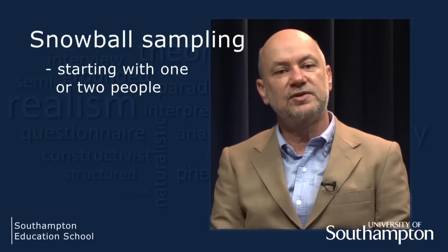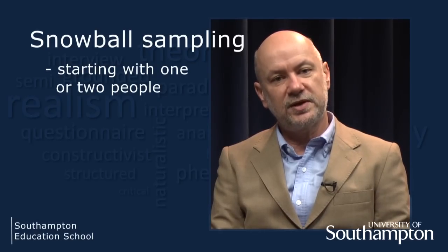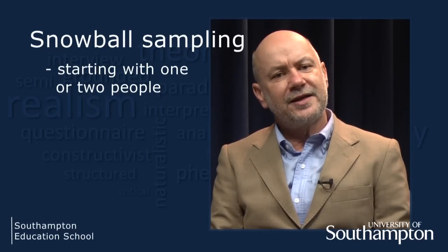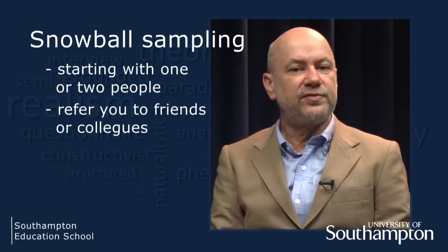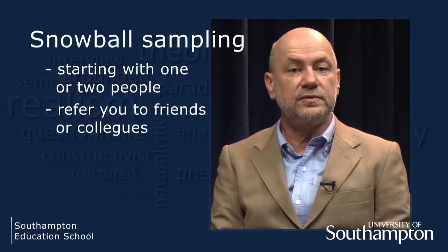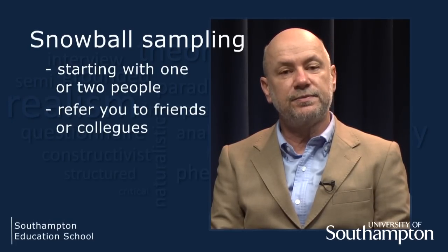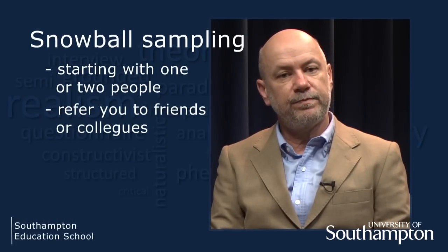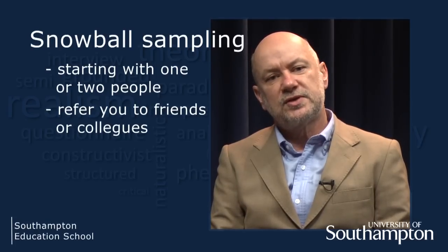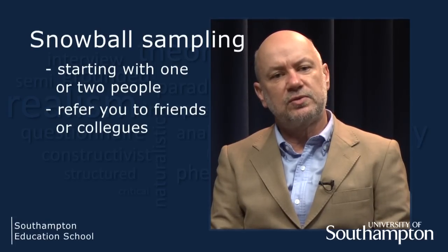Another purposeful sampling method is snowball sampling. This involves starting with one or two people who you identify as having experiences and information relevant to your topic. Then at the end of the sessions you ask them to refer you to friends or colleagues that they feel would be helpful for your study. You repeat this process with subsequent participants.